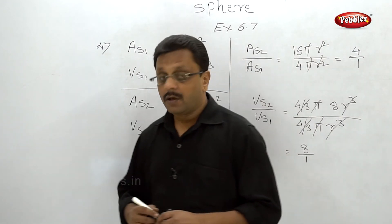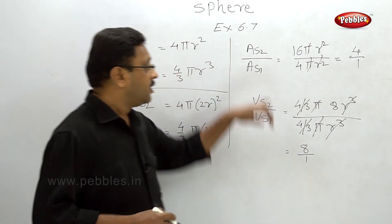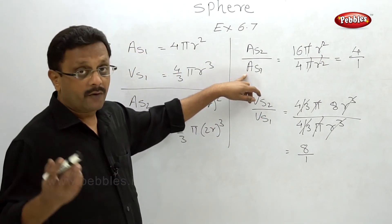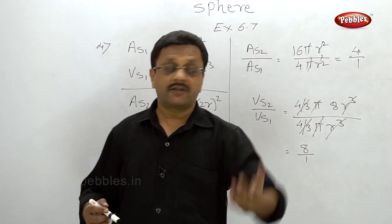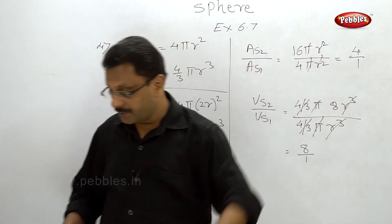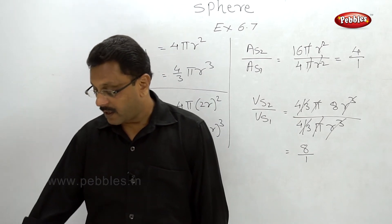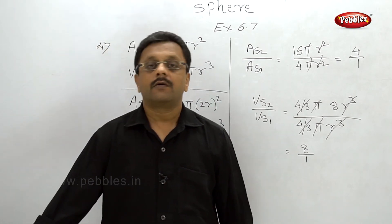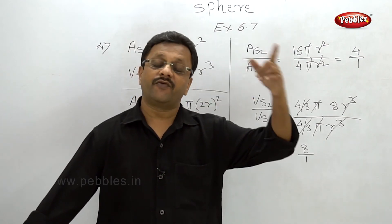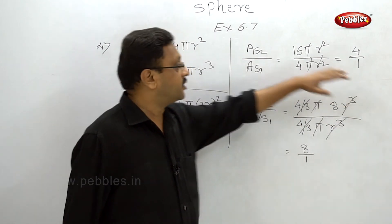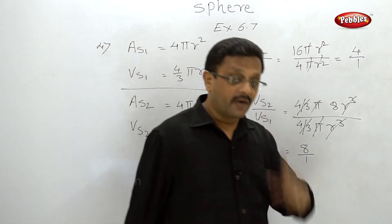Note: some students may take As1/As2 instead of As2/As1 and get 1:4. But the problem asks 'what will be the ratio of its surface area as to that of the first sphere' — meaning second sphere to first sphere. So the correct answer is 4:1 and 8:1. Read the problem very carefully.